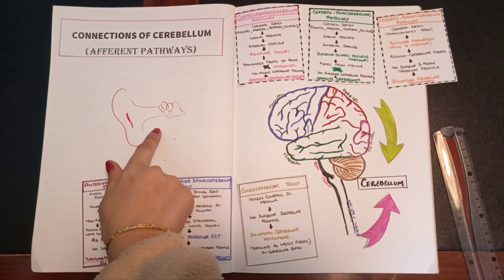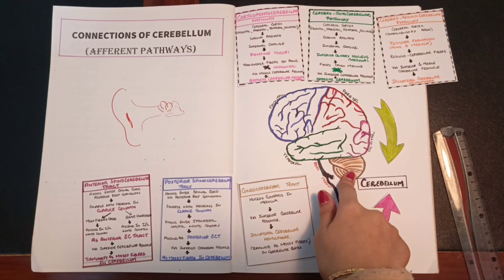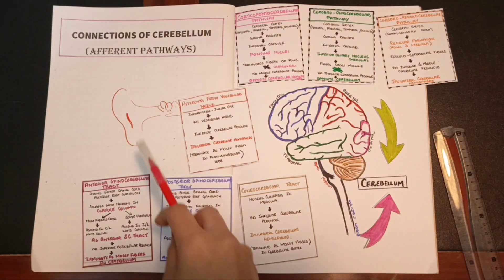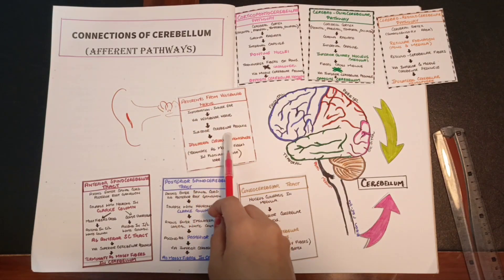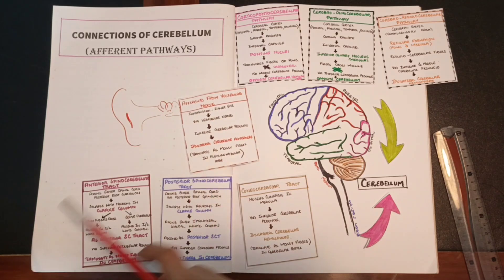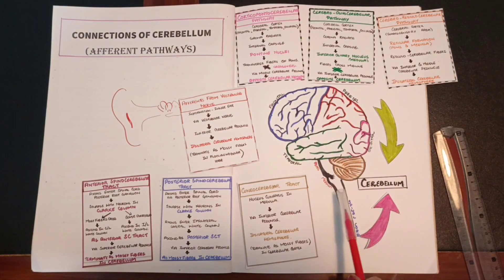Lastly, we will discuss the afferent information which goes from the inner ear to the cerebellum, providing information regarding head position and movement. This information is conveyed via the vestibular nerve. All information from the inner ear via the vestibular nerve enters the cerebellum on the same side via the inferior cerebellar peduncle, and these fibers terminate as mossy fibers in the flocculonodular lobe. In this way we have summarized all the afferent pathways which go to the cerebellum, majorly from the cerebral cortex, spinal cord, and inner ear.